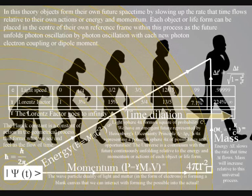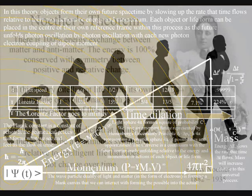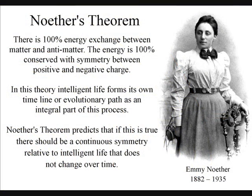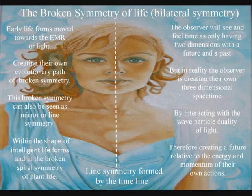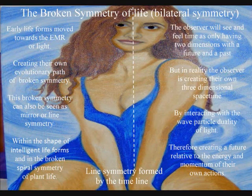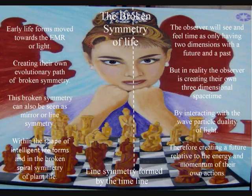In this theory, intelligent life forms its own timeline or evolutionary path as an integral part of this process. Noether's theorem predicts that, if this is true, there should be a continuous symmetry to the energy exchange that does not change over time. In this theory, this is represented by the line symmetry or left and right handedness that all intelligent life has, with creation being in the hand and eye of the beholder.